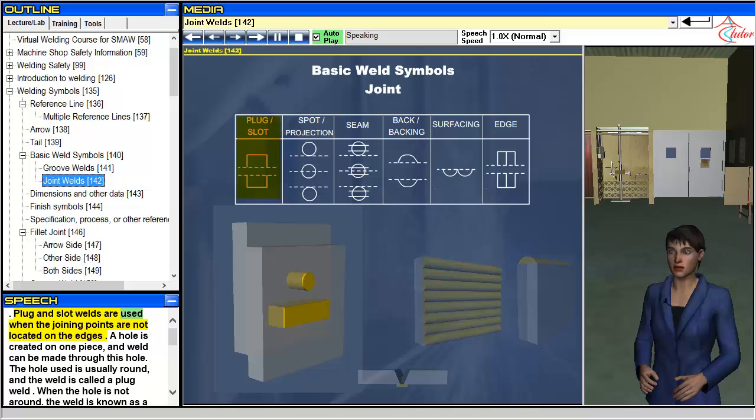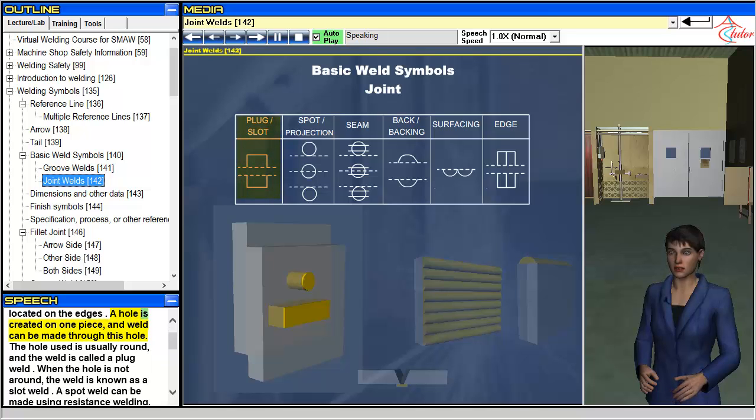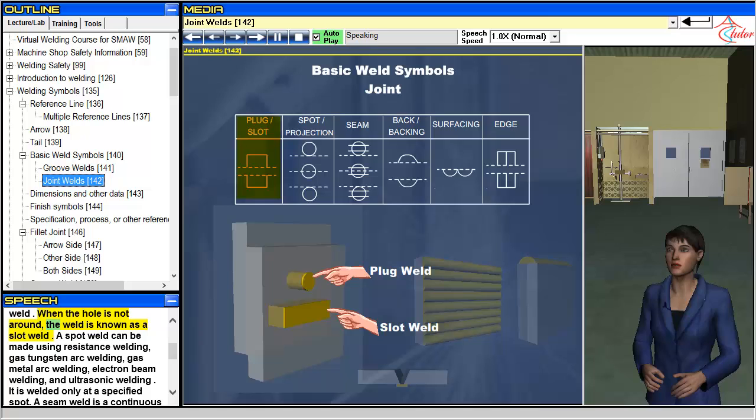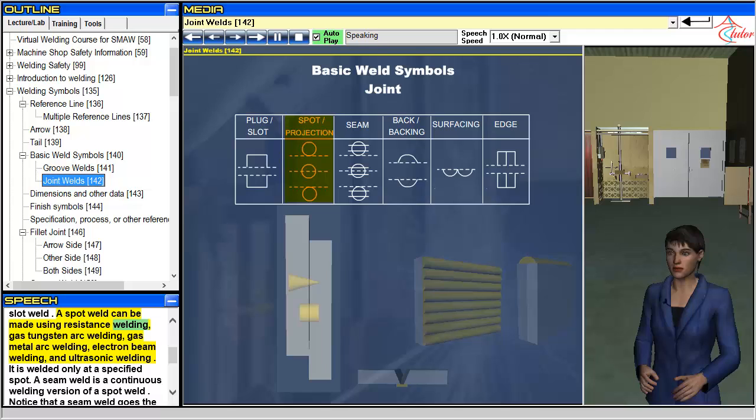Plug and slot welds are used when the joining points are not located on the edges. A hole is created on one piece, and weld can be made through this hole. The hole used is usually round, and the weld is called a plug weld. When the hole is not around, the weld is known as a slot weld.